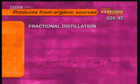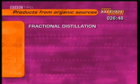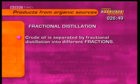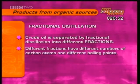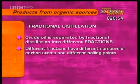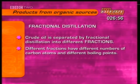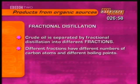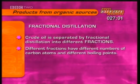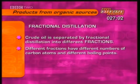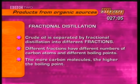The first process was fractional distillation, in which crude oil is separated into different substances, or fractions. Different fractions have different numbers of carbon atoms. That means they have different boiling points, so they condense off at different places up the fractionating column. The more carbon molecules, the higher the boiling point.